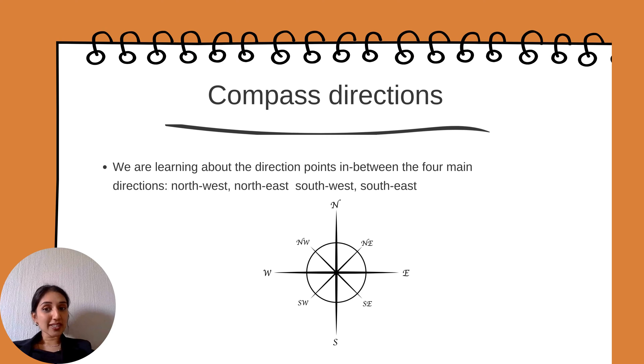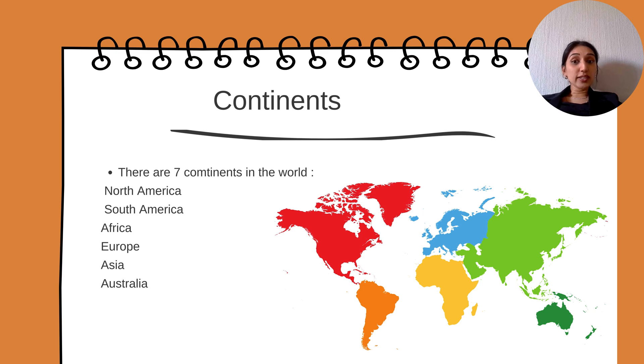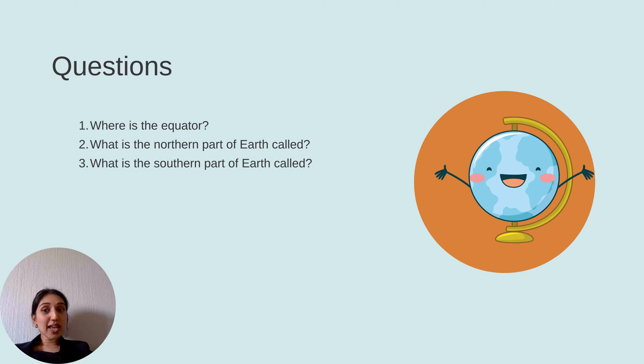Continents. The world is divided into seven continents: North America, South America, Africa, Europe, Asia, and Australia. If you look at the red color that is North America, the orange is South America, the light orange bordering on yellow is Africa, the blue color is Europe, the light green is Asia and the darker green is Australia.